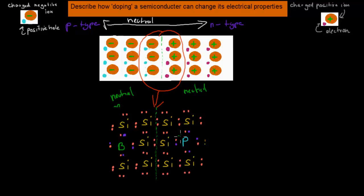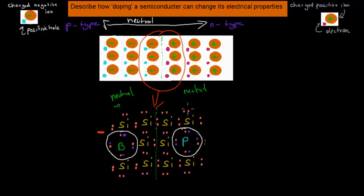The n-type side has lost an electron and the p-type side has gained one. The boron, which used to be neutral, is now negatively charged because it now has more electrons than protons. The phosphorus, which used to have 5 electrons, has lost 1 electron to the other side and is now positively charged. These charged particles in the middle region are called charged ions, and they form the depletion zone.